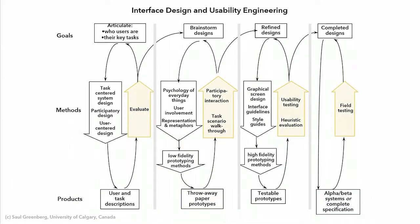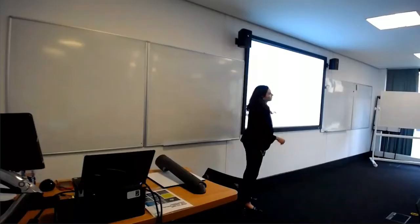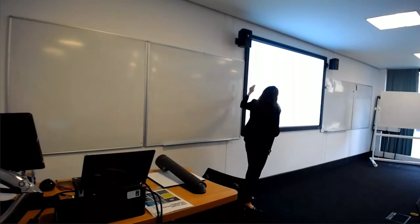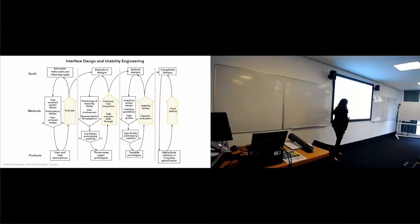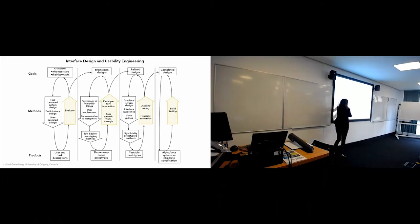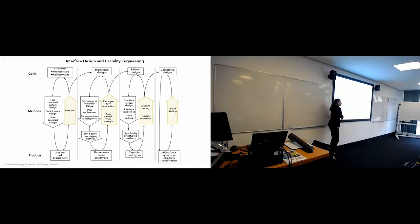This is a very super-mega-complicated scheme, but actually it's very simple if you look at it from the right perspective. It's like a cycle of how people evaluate things. At the top we have goals for each cycle of user interface evaluation and usability engineering. In the middle are the methods, and the last is the products you're supposed to have at the end of each cycle.